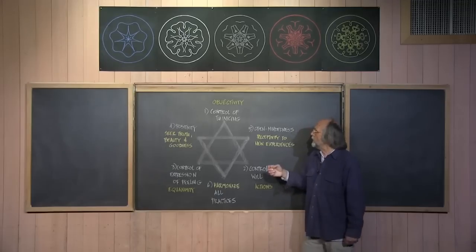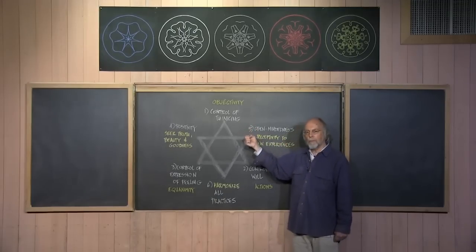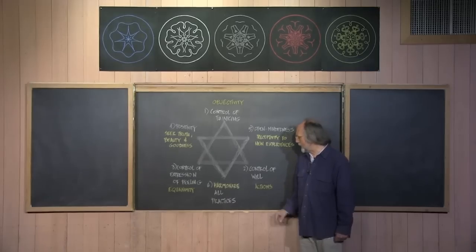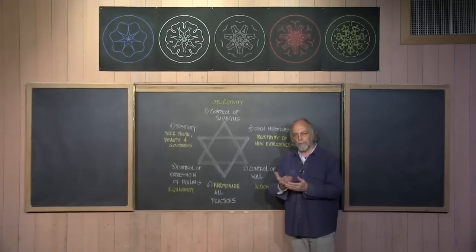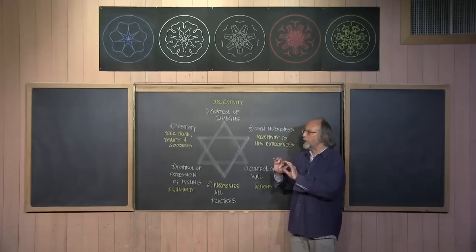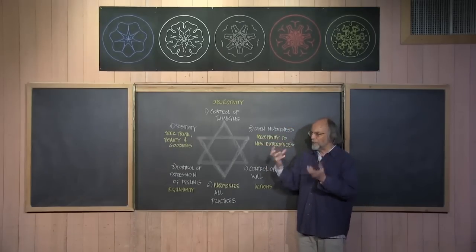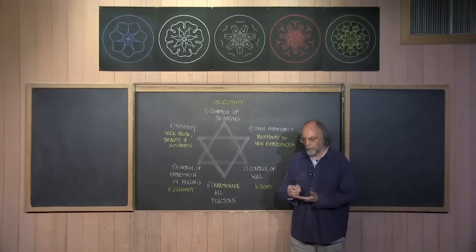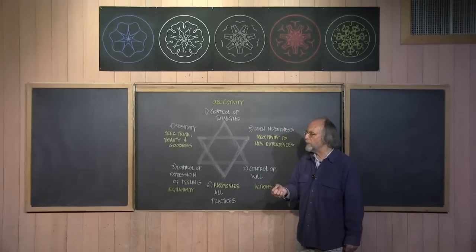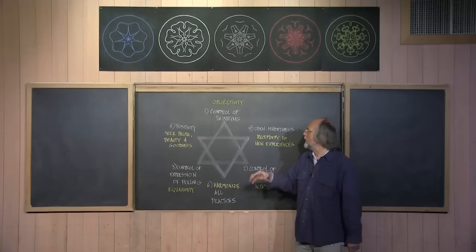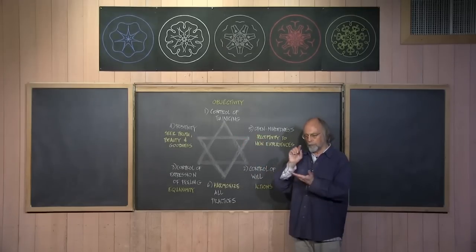He said we need to be able to gain objectivity in our thinking. That means in our thinking, we need to be able to take a simple object, a very simple object. And he says, for example, to gain control of our thinking, he said, don't take anything esoteric. In fact, don't even take a natural object. Rather, take something that a human being has formed, a simple object: a paper clip, a button, a pen, a pencil.